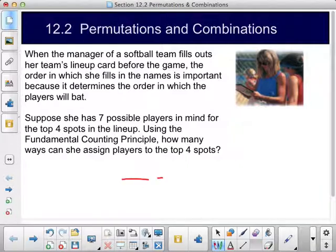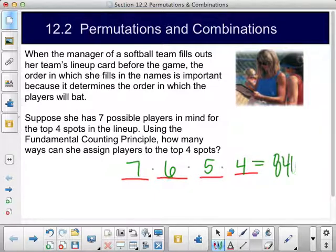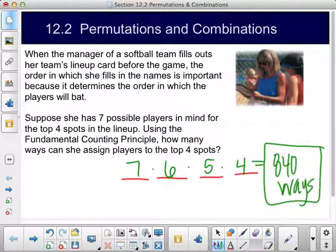Well, if I have my top four spots, for my first spot I have seven people to choose from. After I select that person, I only have six people to choose from for the next spot, five for the spot after that, and four for the spot after that. So if I multiply these numbers together, you get 840 ways that she could make the lineup for those first four spots.